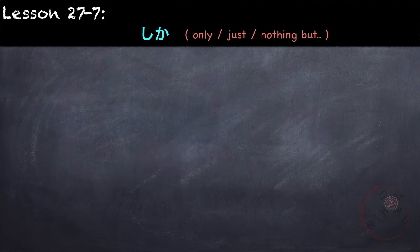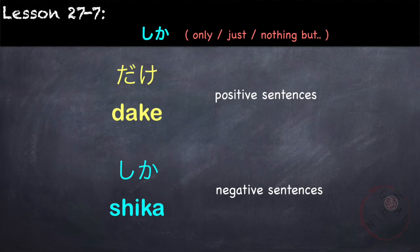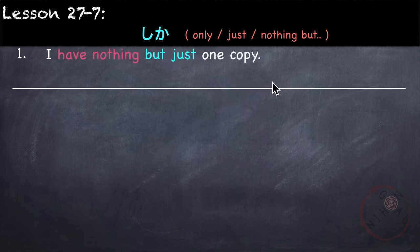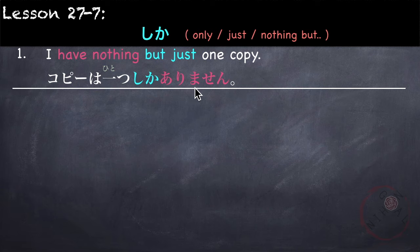Last is the word しか, meaning 'only,' 'just,' or 'nothing but.' It is the same as だけ from lesson 11, but the difference is that しか is always used with a negative sentence, while だけ is used with a positive sentence. It replaces particles が and を, but comes after particles like に or で — にしか、でしか. For example: I have nothing but one copy — コピーは 一つしか ありません (followed by negative verb ありません).